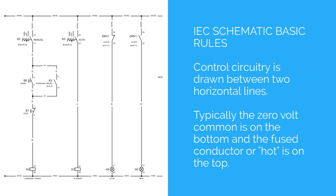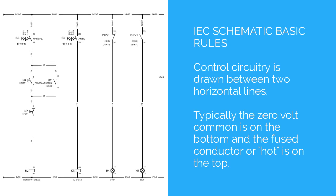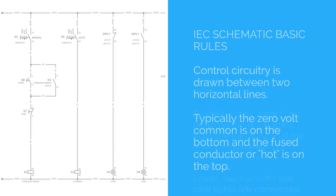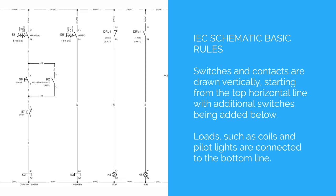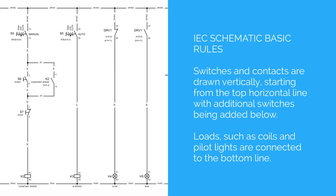IEC schematic basic rules: control circuitry is drawn between two horizontal lines. The fused conductor or hot is on the top, and typically the 0V common is on the bottom. Switches and contacts are drawn vertically, starting from the top horizontal line with additional switches being added below. Loads such as coils and pilot lights are connected to the bottom line.